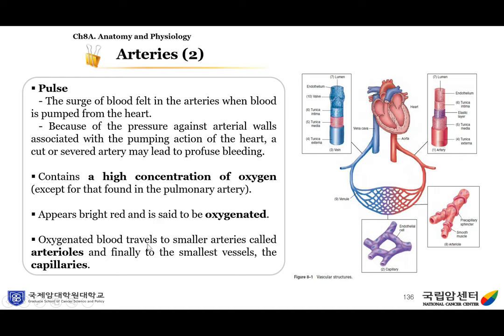The pulse felt in arteries is when blood is pumped from the heart. Because of the pressure against arterial walls associated with the pumping action of the heart, a cut or severed artery may lead to profuse bleeding. Arteries contain a high concentration of oxygen, except for the pulmonary artery. The artery appears bright red and is said to be oxygenated. Oxygenated blood travels to smaller arteries called arterioles, and finally to the smallest vessels, the capillaries.